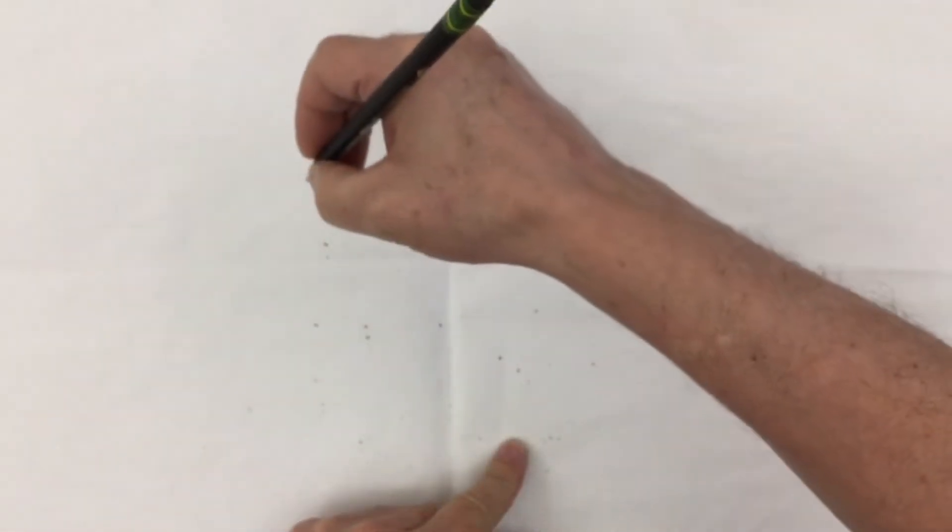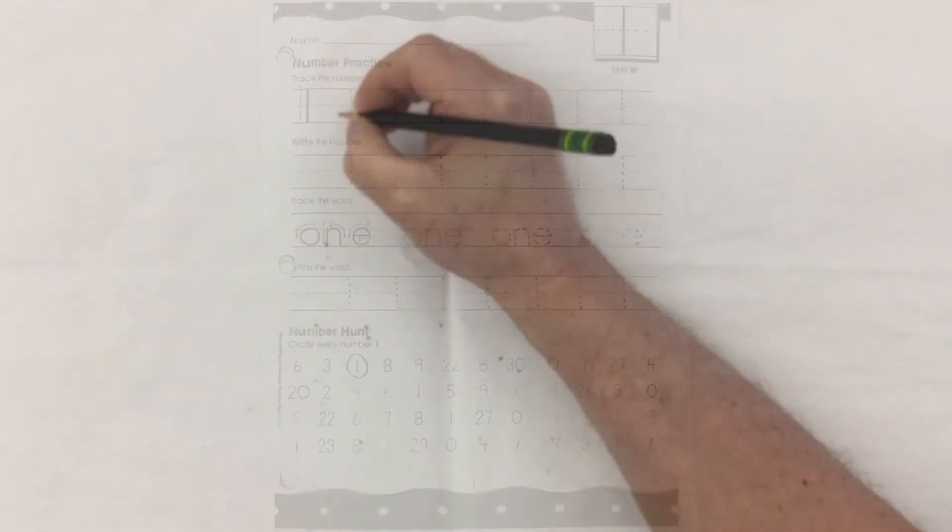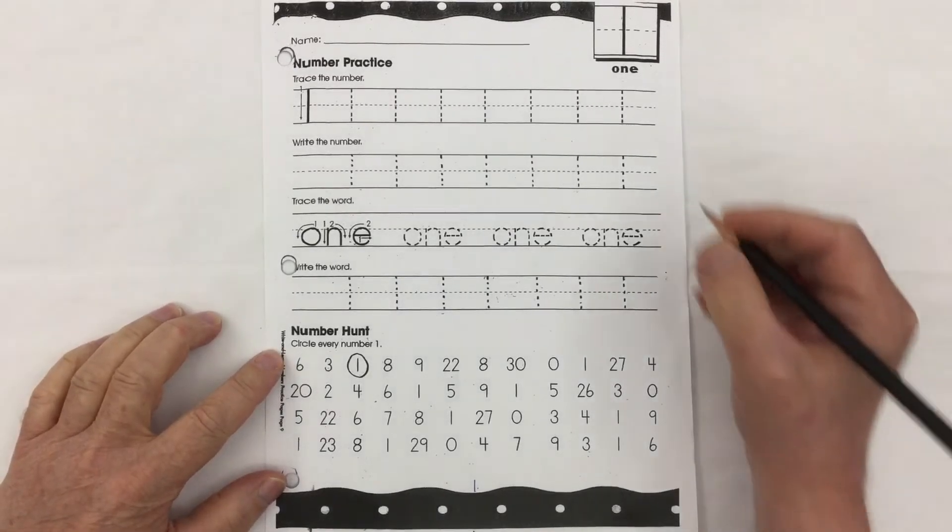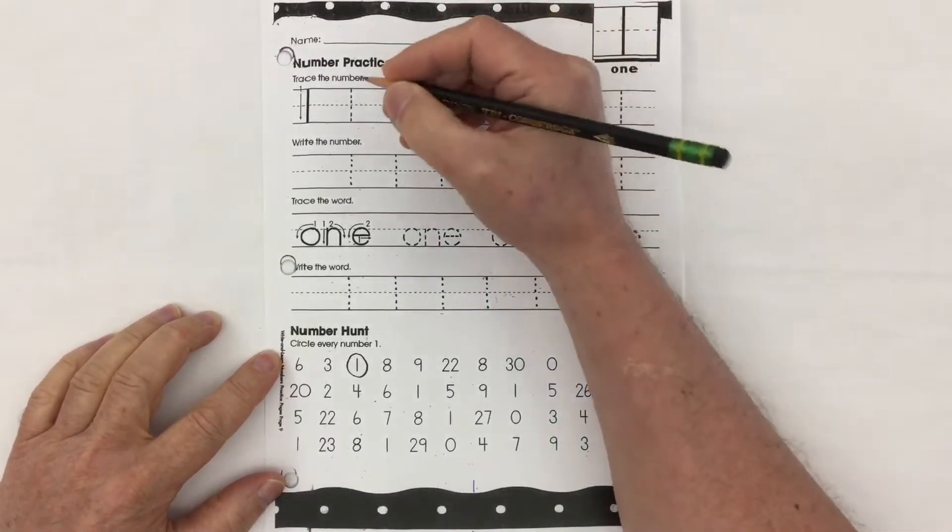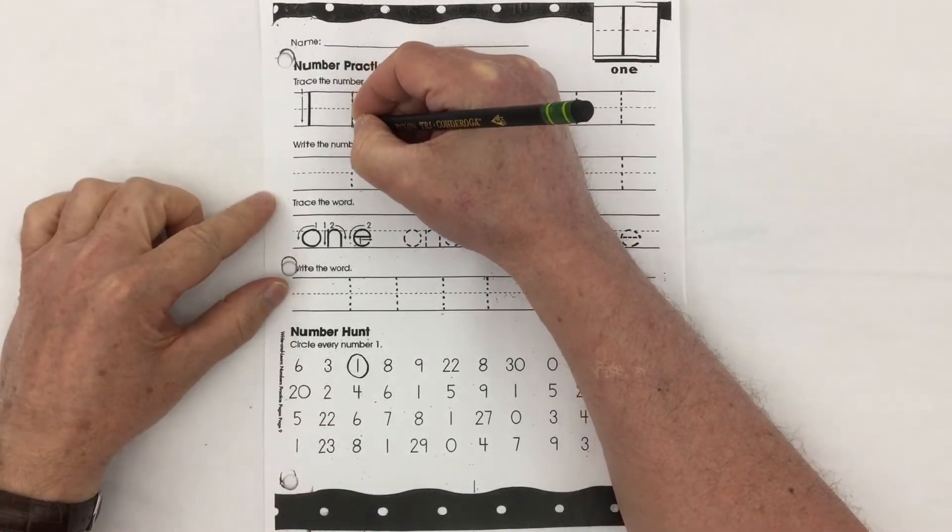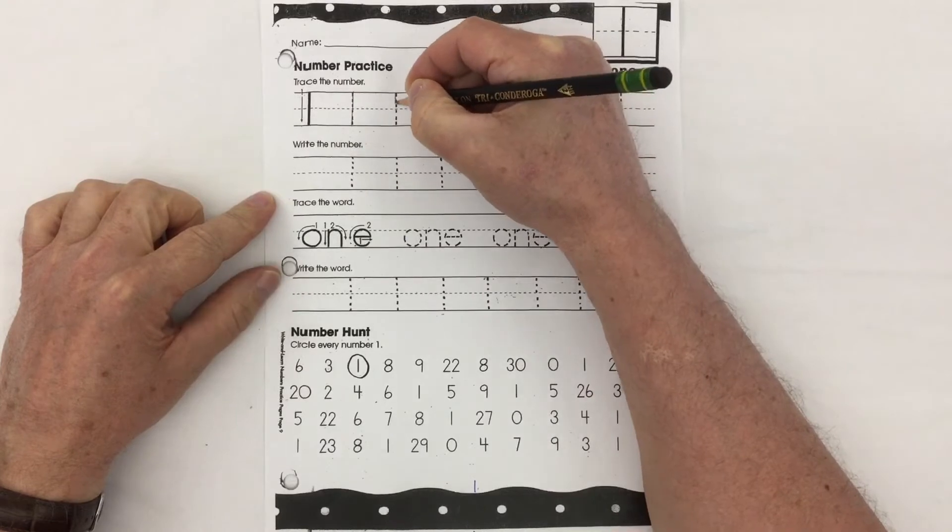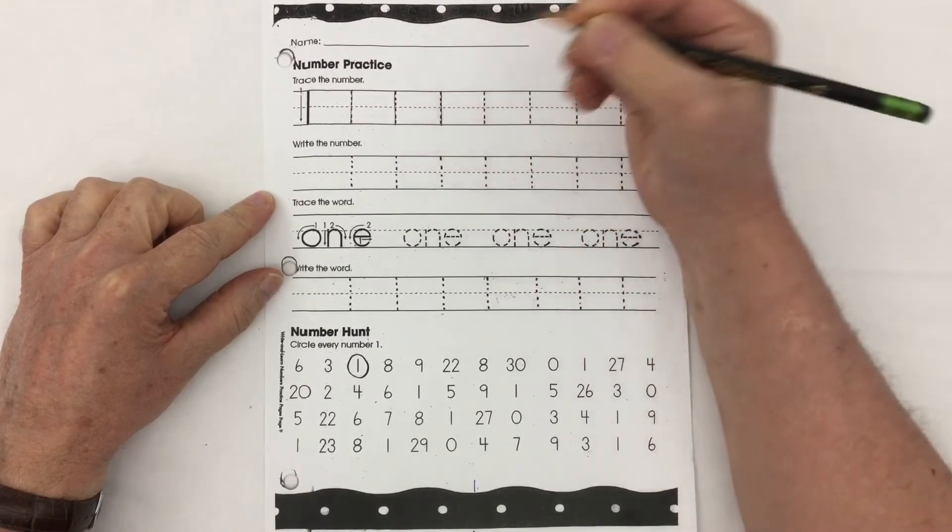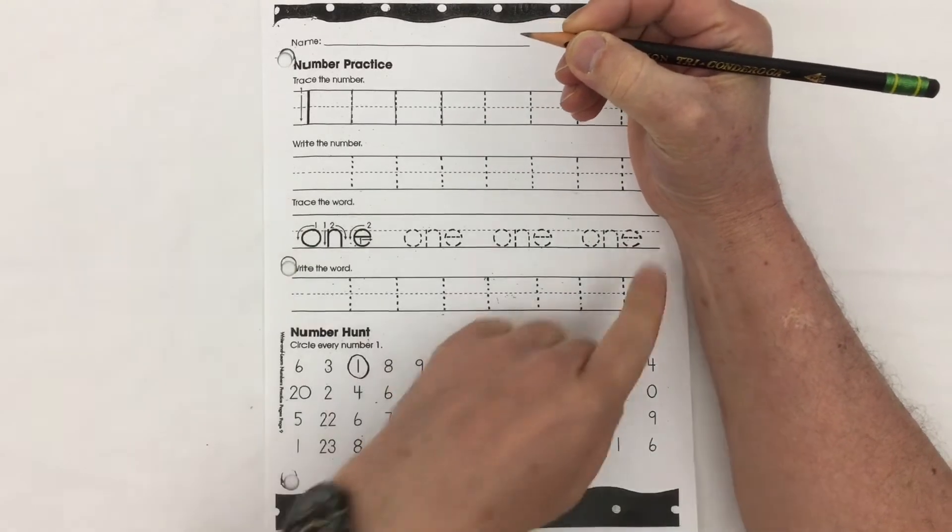So here we have a practice sheet for number formation. Taking my pencil, I want to start at the top of the number one and go down. Start at the top and go down, top and go down. Notice I'm holding my pencil with the proper grip and my arm is flat on the desk.